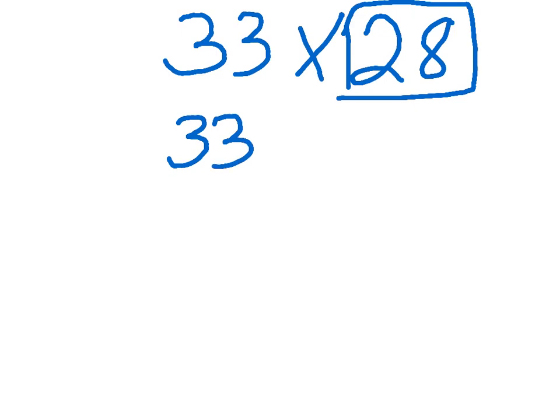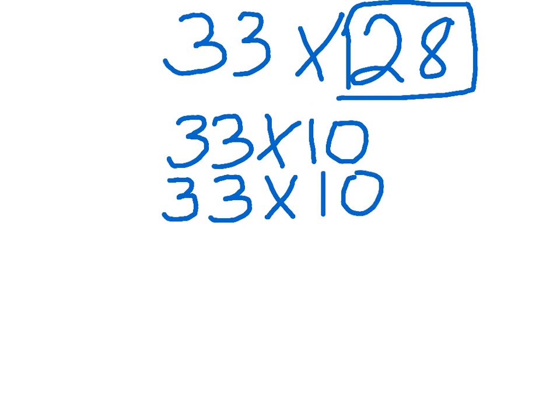For example, 33 times 10, because 10 is a very friendly number to multiply by. Then we would have 18 left out of 28. Take another 33 times 10, and then we would have 8 left out of 28. And of course you could break that apart however you wanted to, but let's just say 33 times 4 and another 33 times 4.